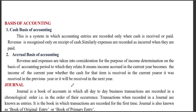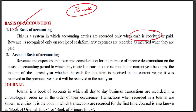There are two bases of accounting. One is the cash basis: under cash basis, we record transactions only when cash is received or paid. The other is the accrual basis of accounting, where transactions are recorded when they occur, regardless of when cash is paid or received.